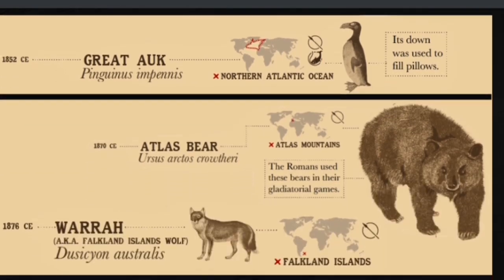In 1852, the great auk — a species of penguin that lived in the northern Atlantic Ocean — died due to hunting and over-fishing; it was thought its fat or feathers were used to fill pillows. In the 1870s, the Atlas bear went extinct, mainly because the Romans used it in gladiator fights in their arenas. In 1876, the warrah went extinct — it used to live in the Falkland Islands and died due to hunting.